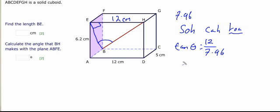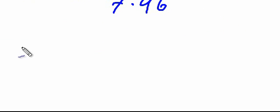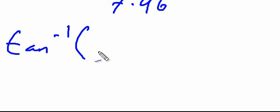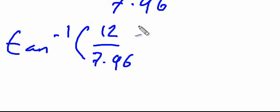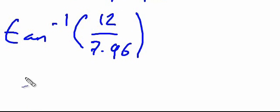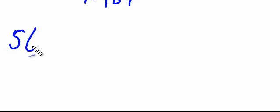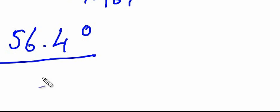Now, to get theta on its own, we need to get rid of the tan. And how do we do that? We use anti-tan, or inverse tan, found on your calculator by typing shift tan. So tan to the minus 1 of the other side, so 12 over 7.96. Now type this into your calculator, and you'll get the answer in degrees of 56.4. And that is the question now done.